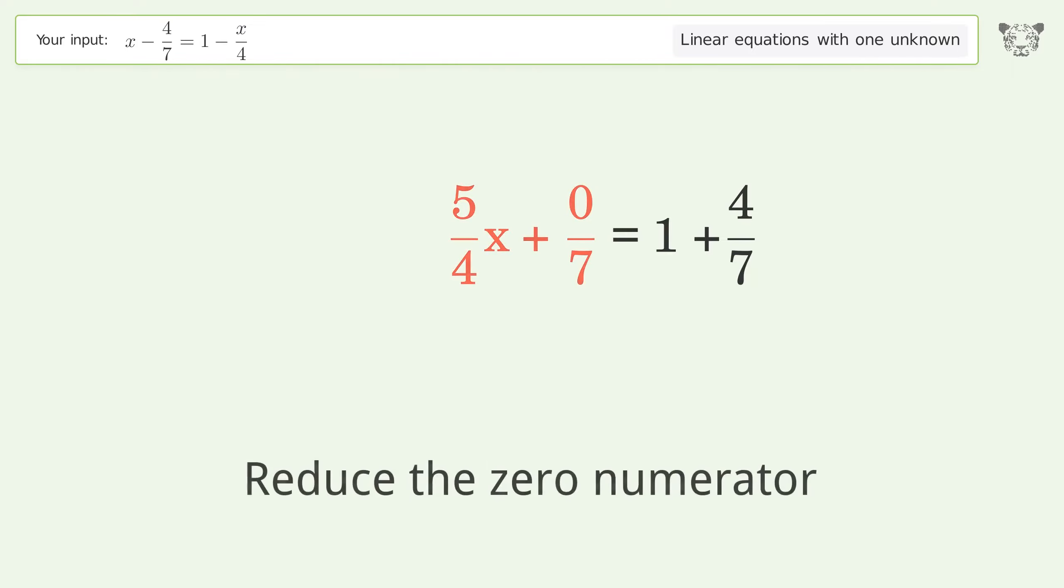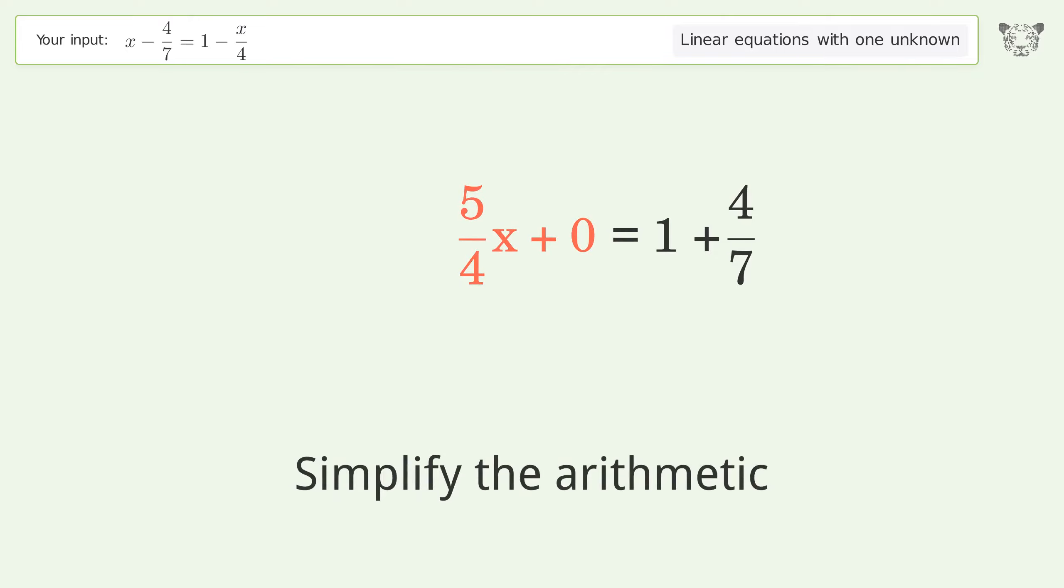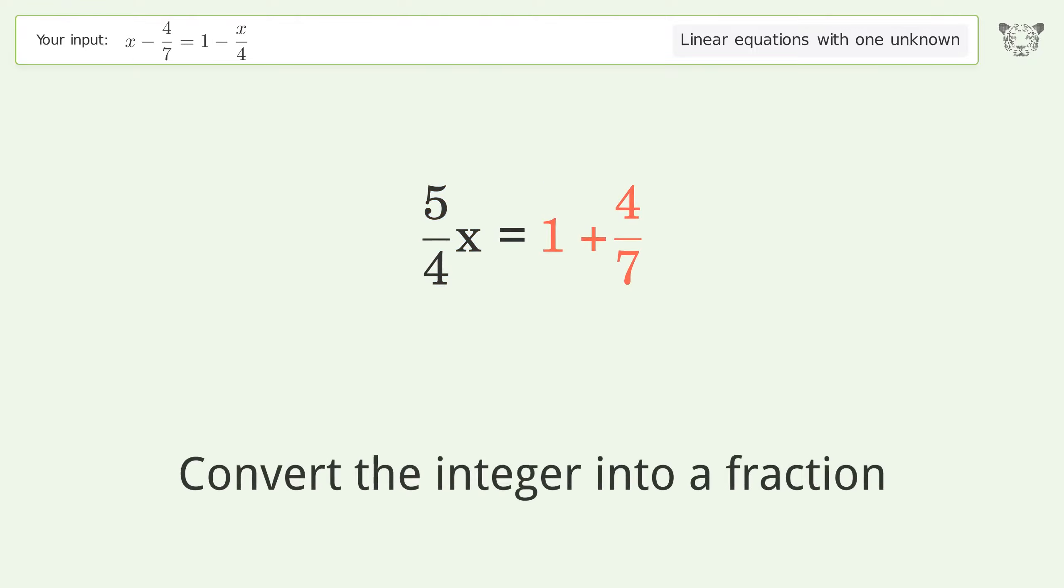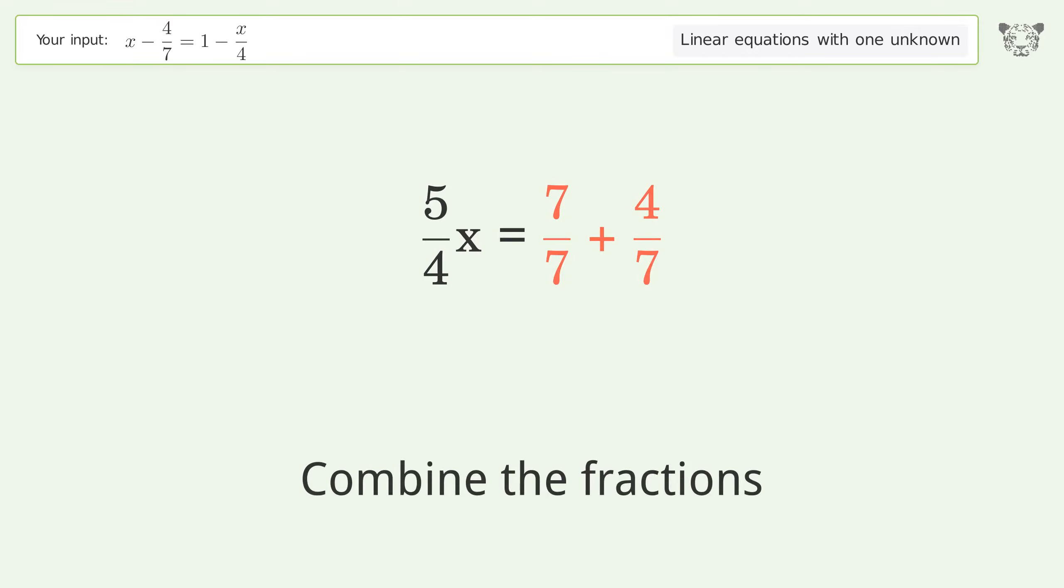Reduce the zero numerator. Simplify the arithmetic. Combine the integer into a fraction. Combine the fractions. Combine the numerators. Isolate the x.